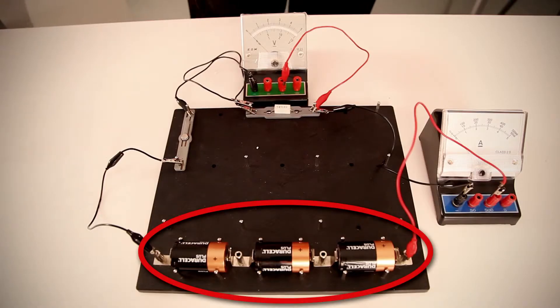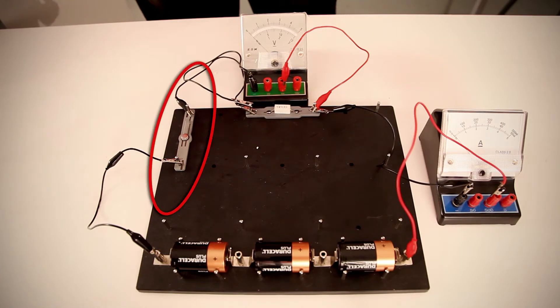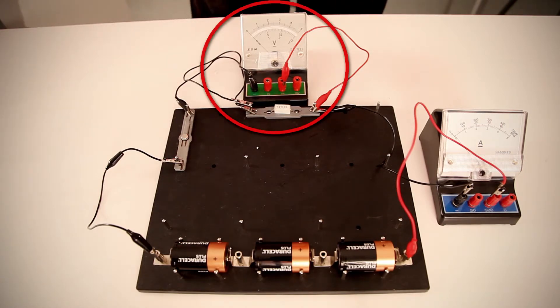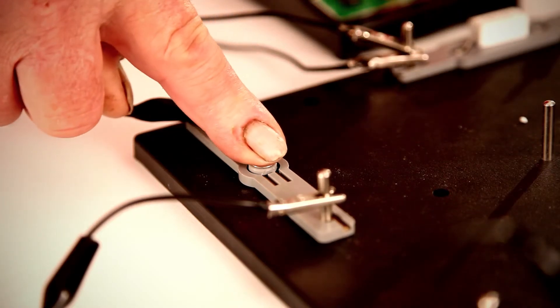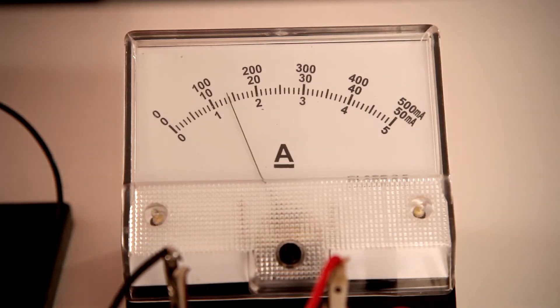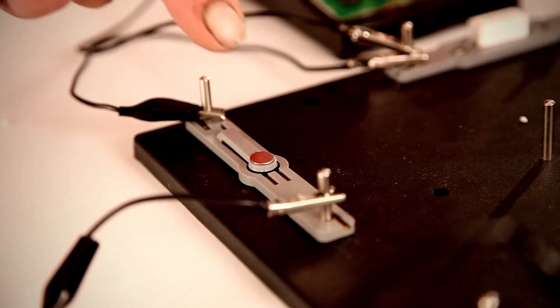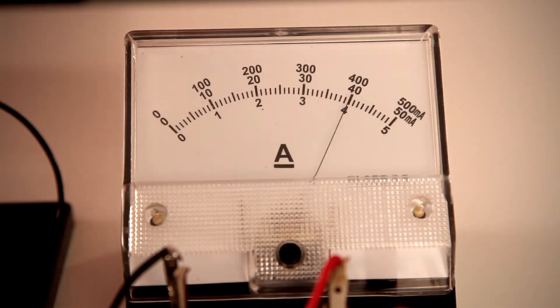Three 1.5 volt cells are connected in series to a resistor, an ammeter, and a switch, with a voltmeter in parallel to the resistor. With the three cells in the circuit, close the switch and record the readings on the voltmeter and ammeter. Repeat these readings with two cells and finally with one cell.